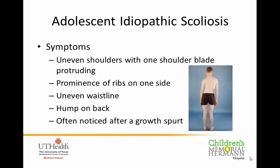What are symptoms you may notice that would bring someone in for evaluation? You may notice uneven shoulders, or one shoulder blade protruding more than the other. Summertime, when kids are in swimsuits, is a common time these things become noticeable. You may also notice prominence of ribs on one side, an uneven waistline, or a hump on the back when the child bends over. These things are often noticed after a growth spurt.